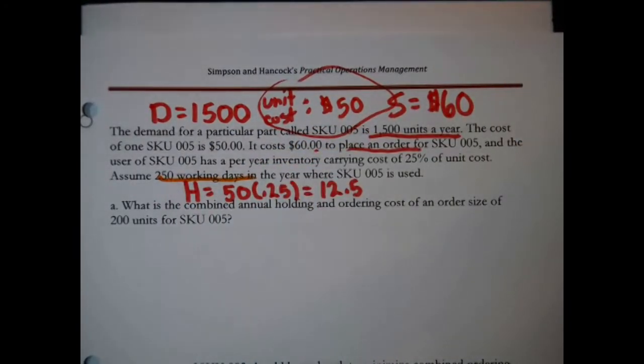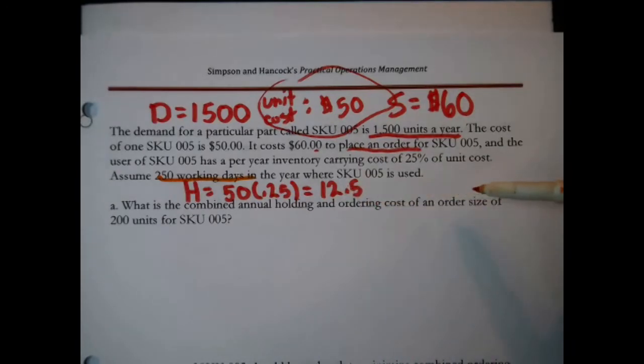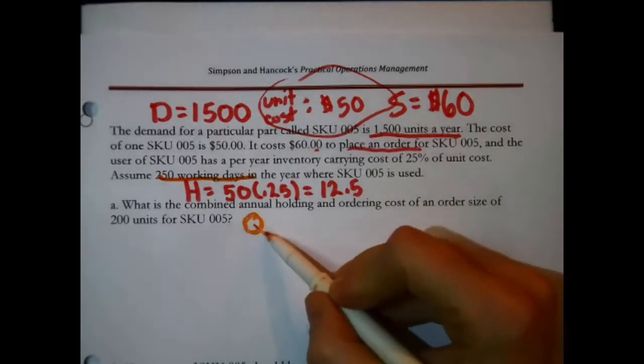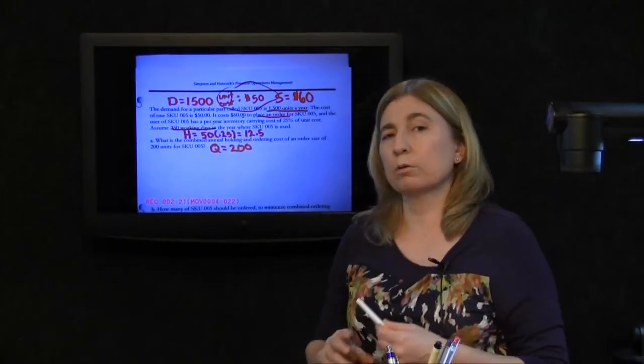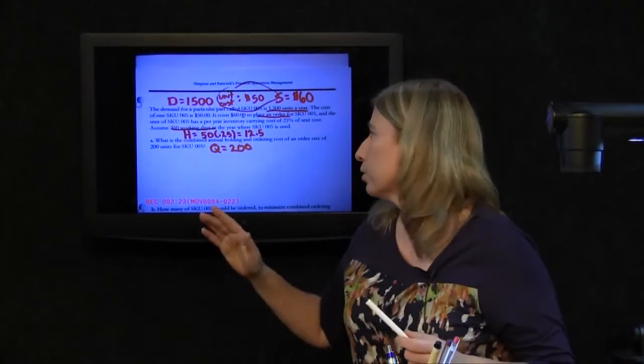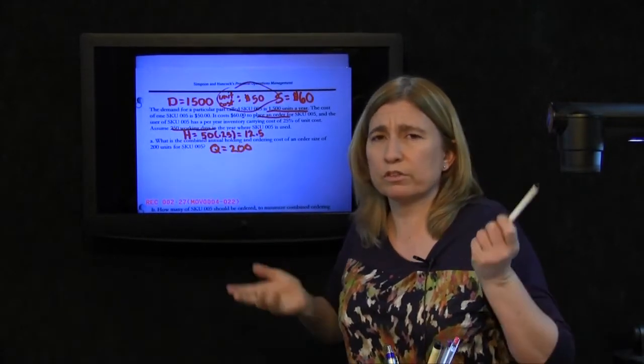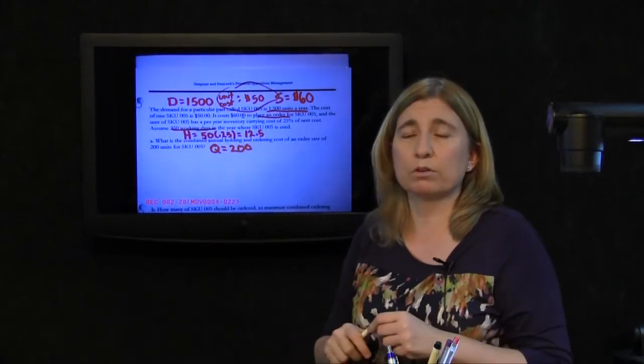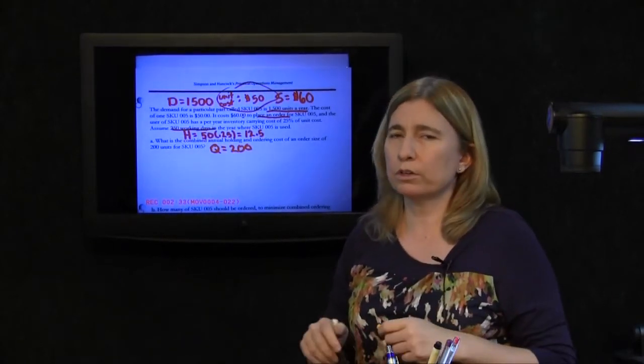What's the first question though? It says, what is the combined annual holding and ordering cost of an order size of 200 units for SKU005? This question is giving you an order size. I was saying EOQ, economic order quantity, calculating the order size. No, at least not for this first question. It's saying that somebody decided that they're going to order 200 at a time. It's asking what the combined ordering and holding costs are.